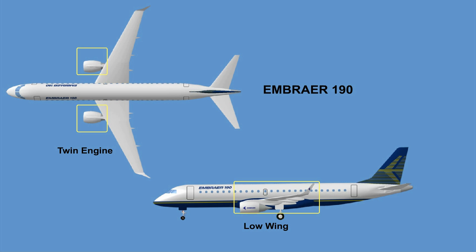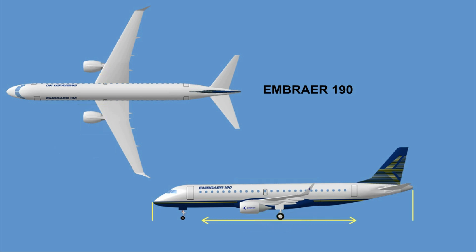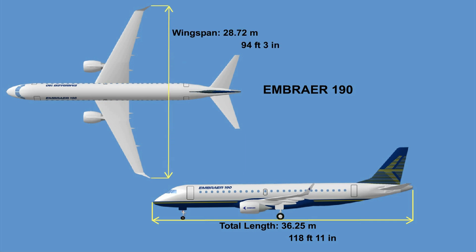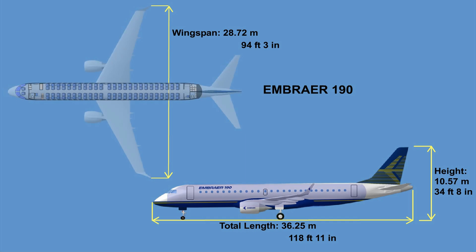The aircraft has a total length of 36.25 meters (118 feet 11 inches), a wingspan of 28.72 meters (94 feet 3 inches), and an approximate height of 10.57 meters (34 feet 8 inches). It also features a pressurized cabin.